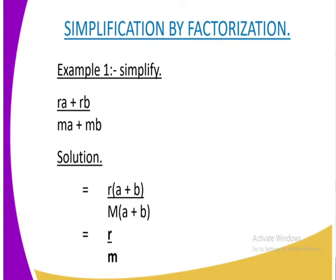So we are going to get m outside, then we shall remain with a + b. Because a + b and a + b, they are both common, so we are going to divide. They are going to cancel out to remain with r over m.